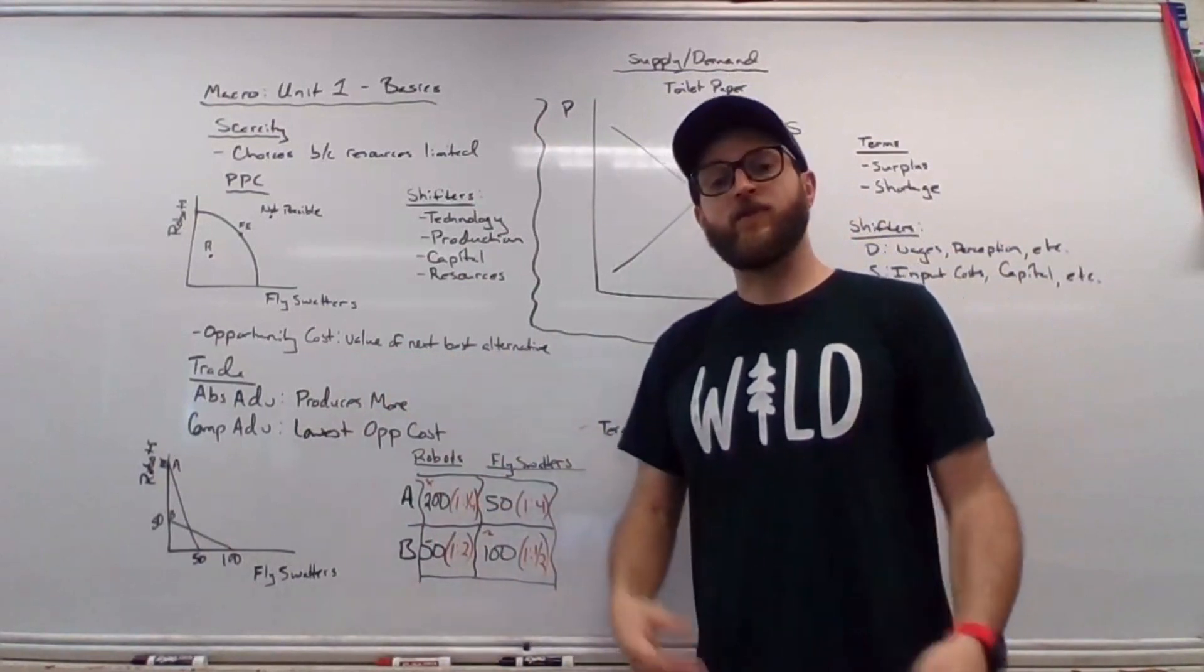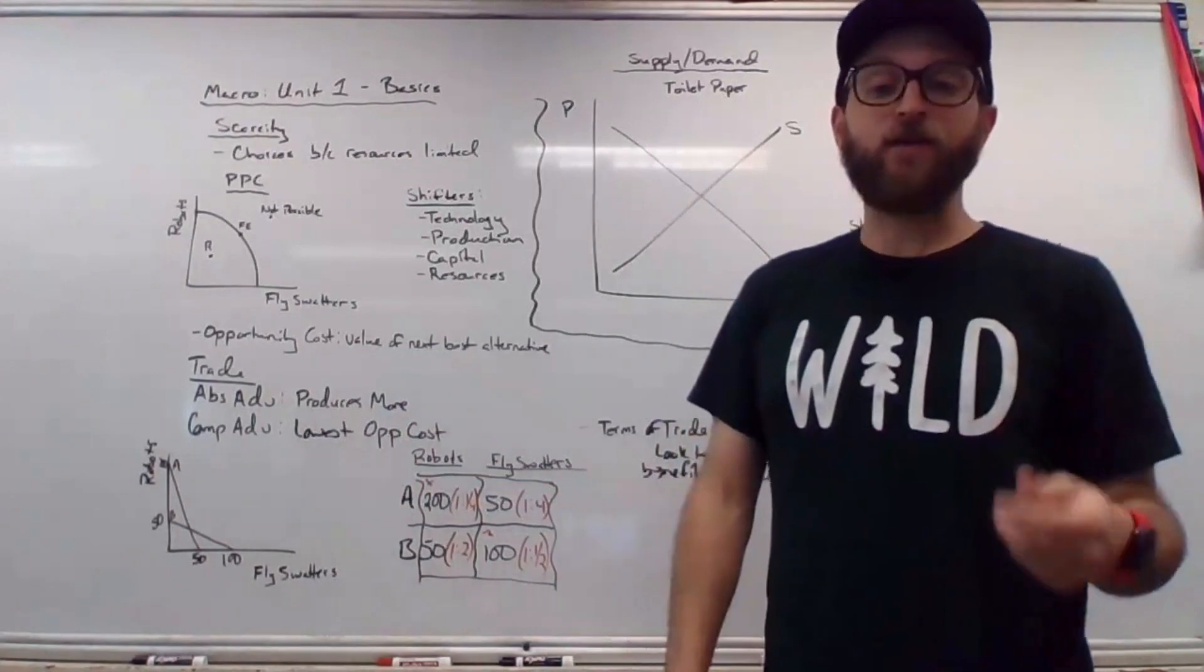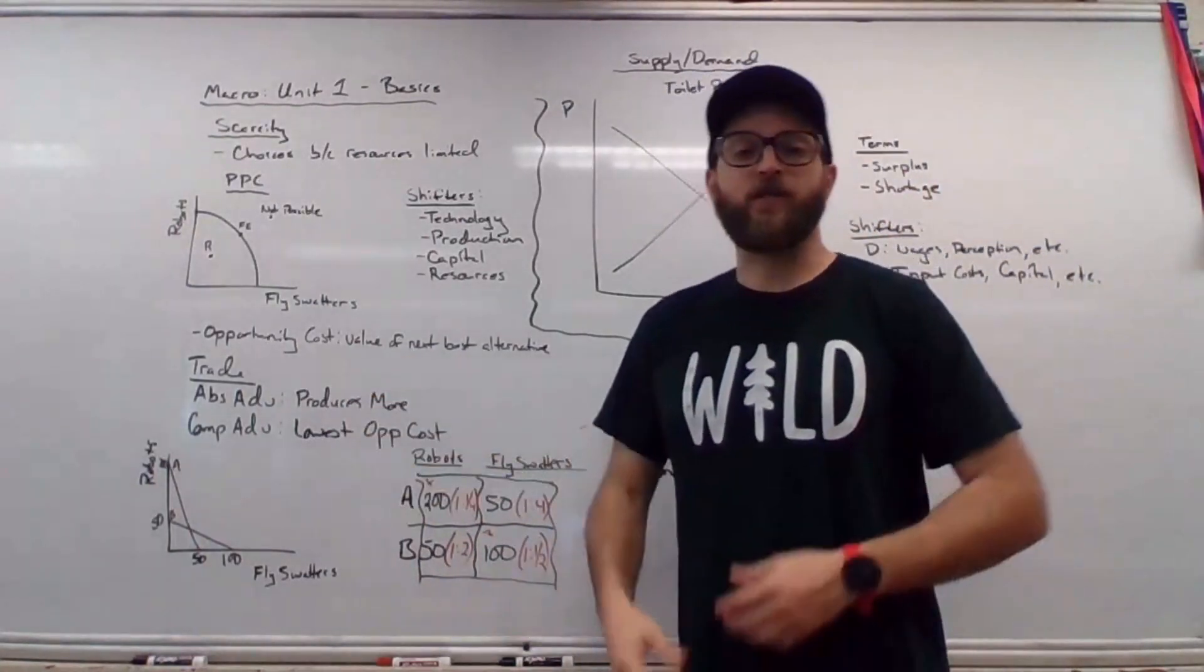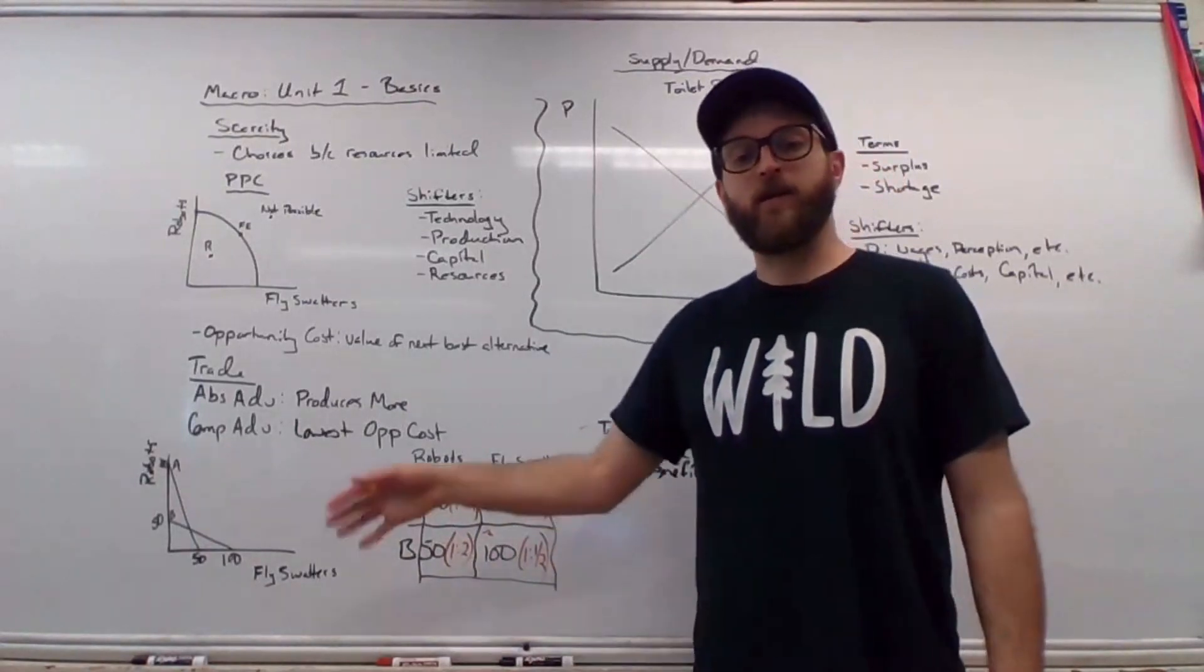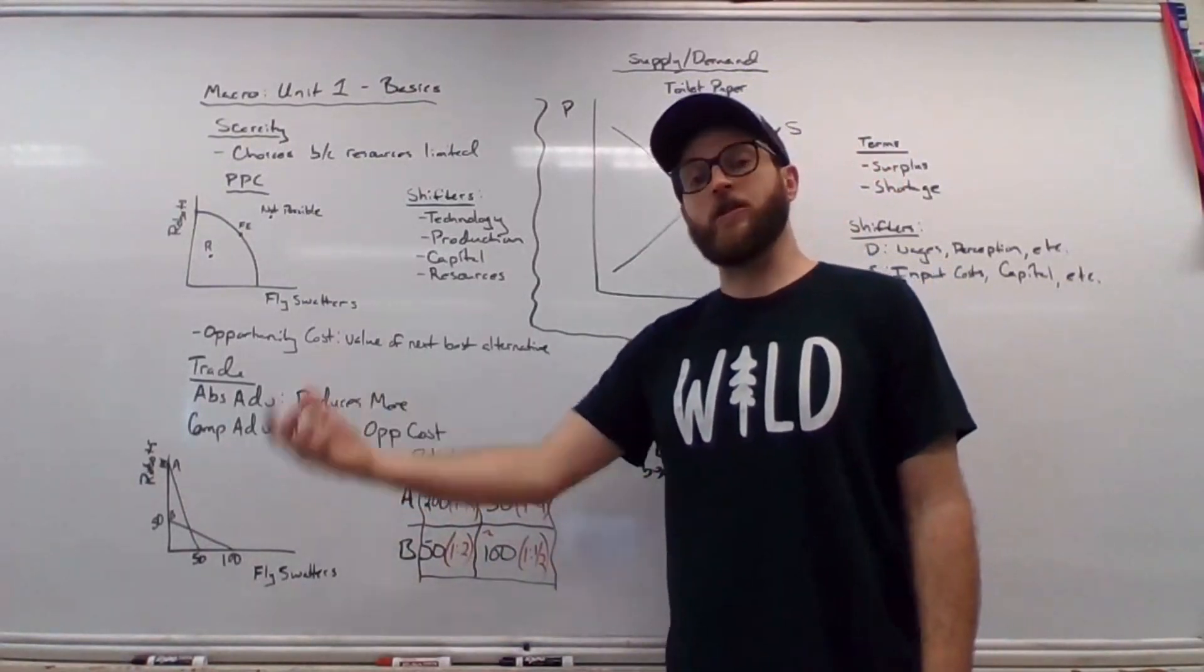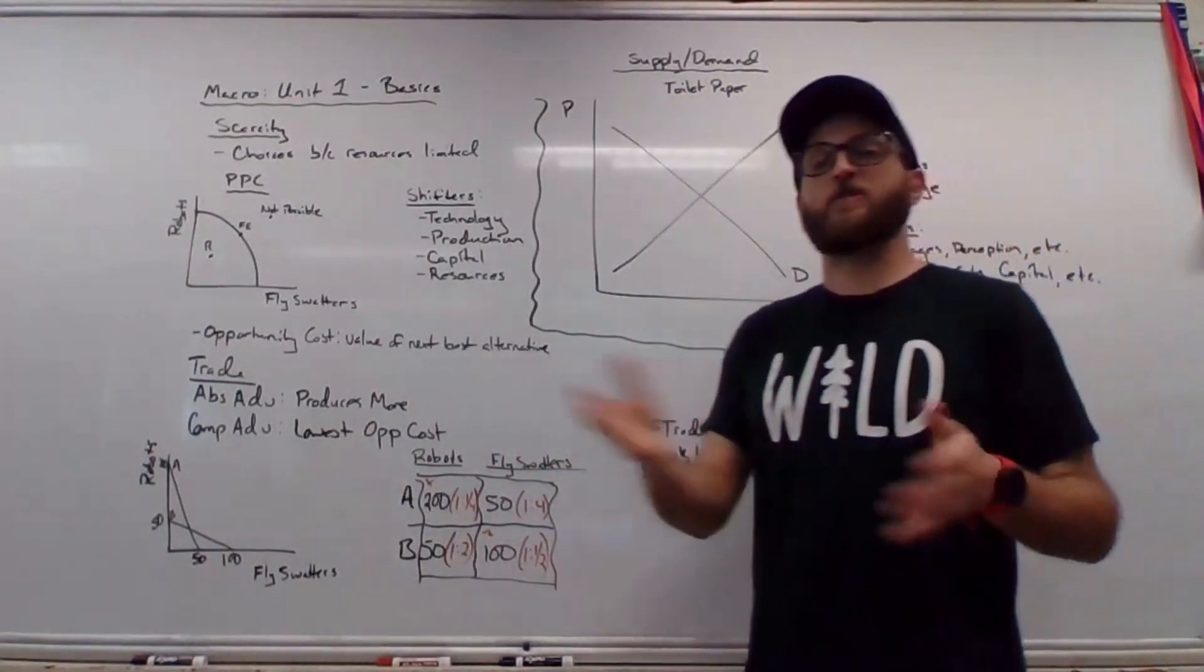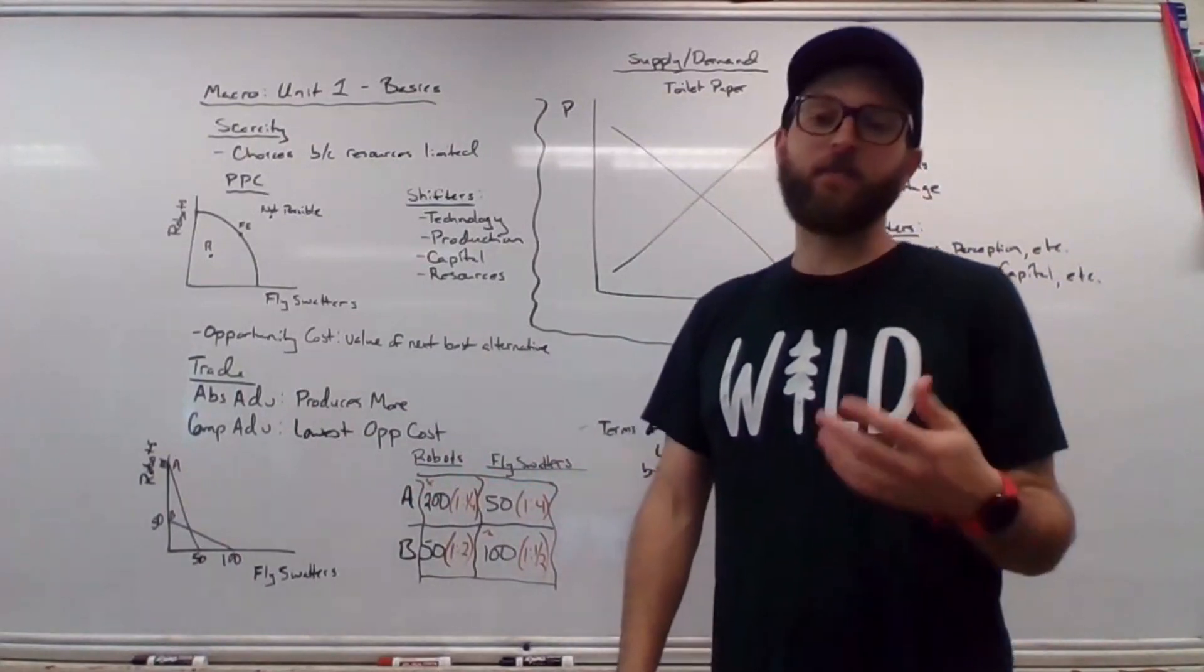Opportunity cost is the idea of trading based on the value of the next best opportunity. We examine this through absolute advantage, which is which country actually produces more, or comparative advantage, which country produces at the lowest opportunity cost. Remember this analysis of trade in macro is usually just between two countries instead of 30 or 40 like in the real world, just to keep things simple.